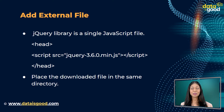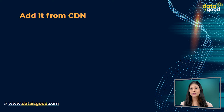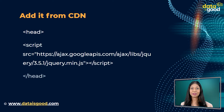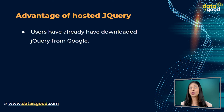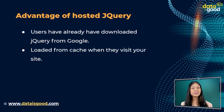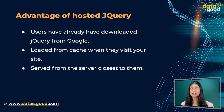Now let us move on to our second way of adding jQuery — from a jQuery CDN. If you do not want to download and host jQuery yourself, you can include it from a CDN, which is a Content Delivery Network. Google is an example of someone who hosts jQuery. One big advantage of using hosted jQuery from Google is that many users already have downloaded jQuery from Google when visiting another site. As a result, it will be loaded from cache when they visit your site, leading to faster loading time. Also, most CDNs will serve the file from the server closest to the user, which also leads to faster loading time.